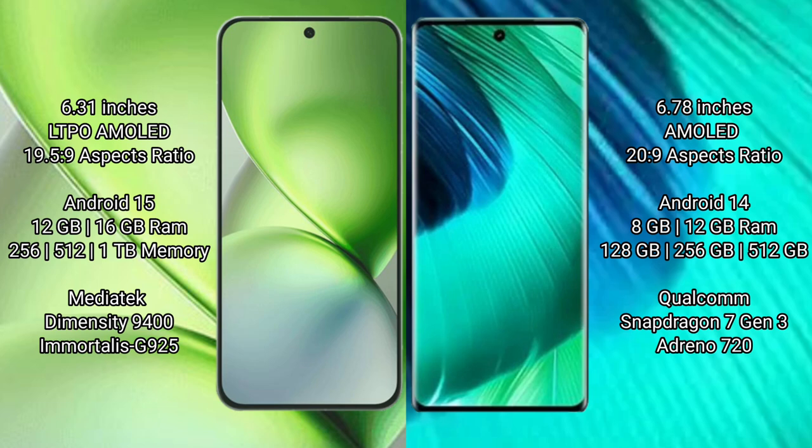The Vivo X200 Pro Mini comes with 12GB or 16GB RAM and 256GB or 1TB internal storage, powered by a MediaTek Dimensity 9400 processor and Adreno 925 GPU. The Vivo V30 offers 8GB or 12GB RAM and 256GB internal storage, with a Qualcomm Snapdragon 7 Gen 3 processor and Mali-G720 GPU.